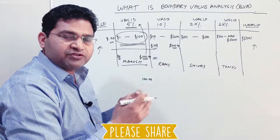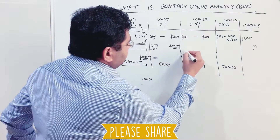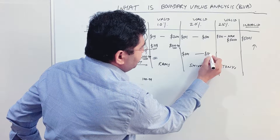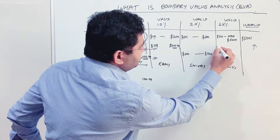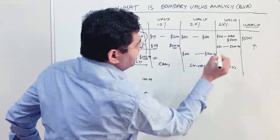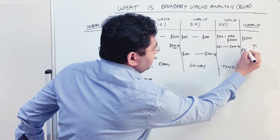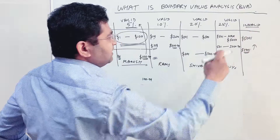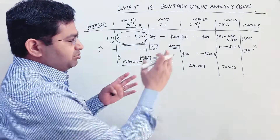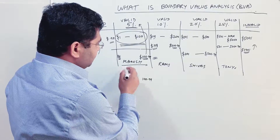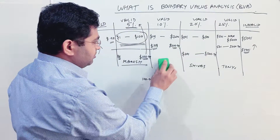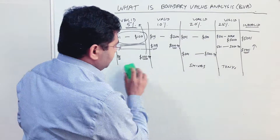For the twenty percent discount partition, the lower boundary is two hundred and one dollars, and the higher boundary is five hundred point nine nine. For the twenty-five percent discount partition, the lower boundary is five hundred and one dollars, and the higher boundary is five thousand point nine nine. At five thousand and one dollars the purchase becomes invalid and should not be allowed.